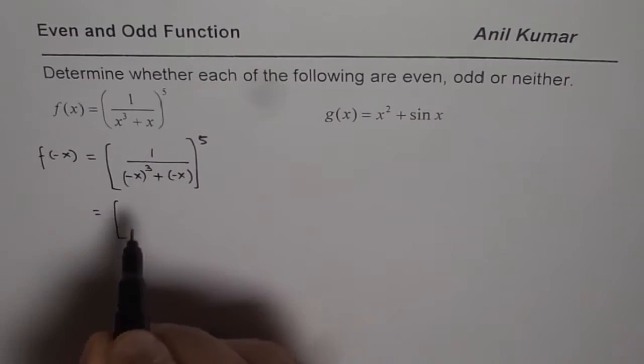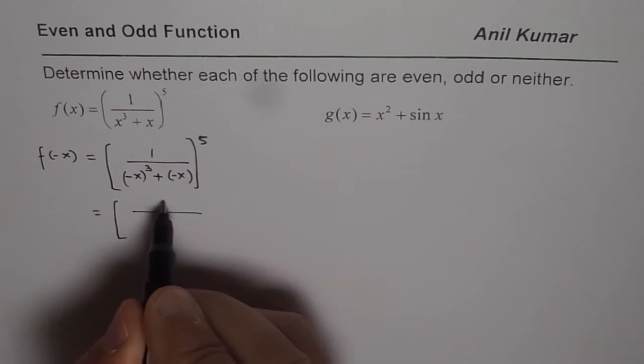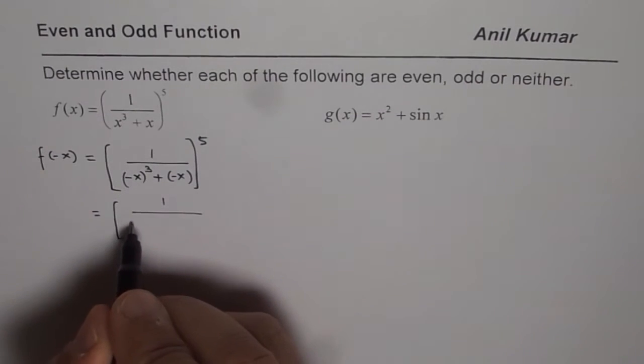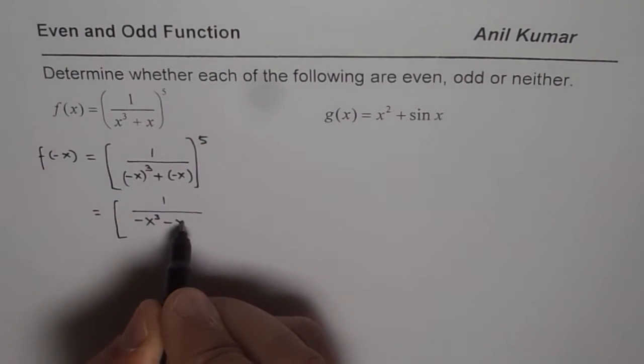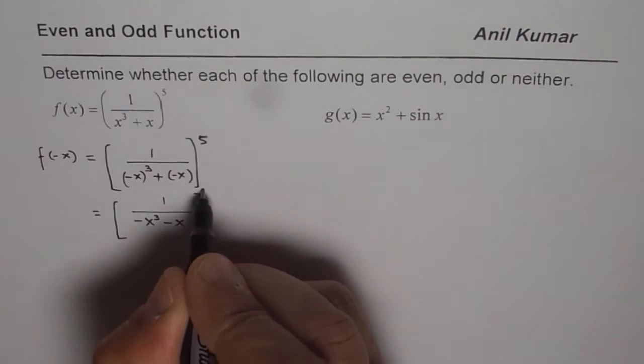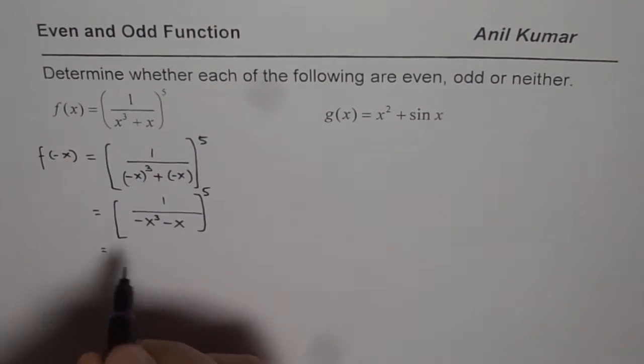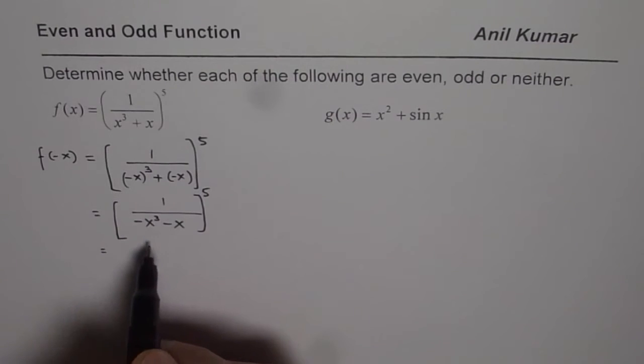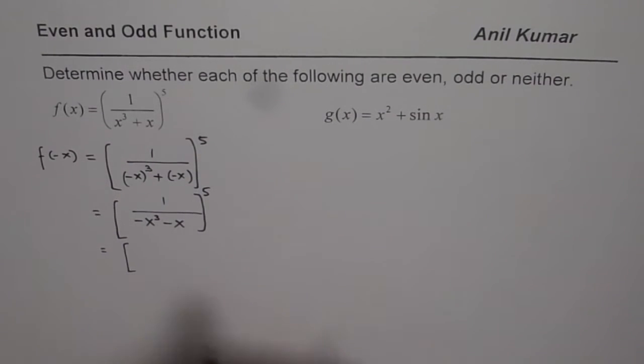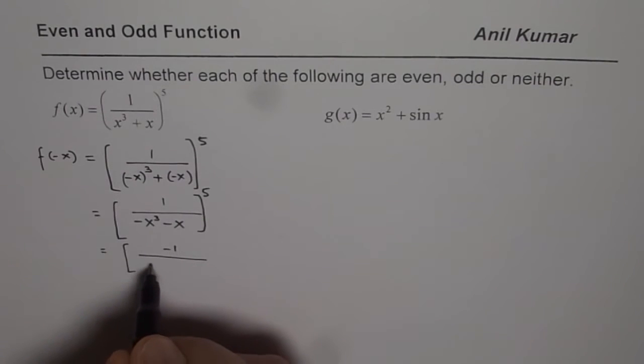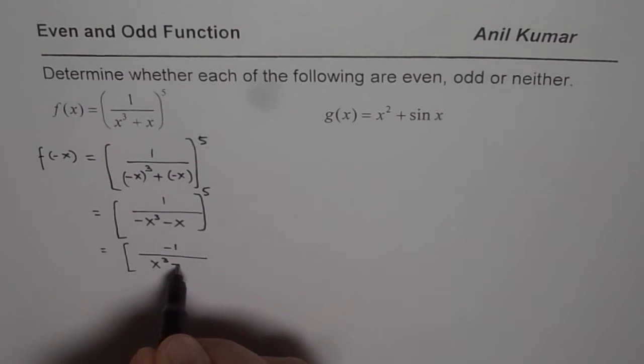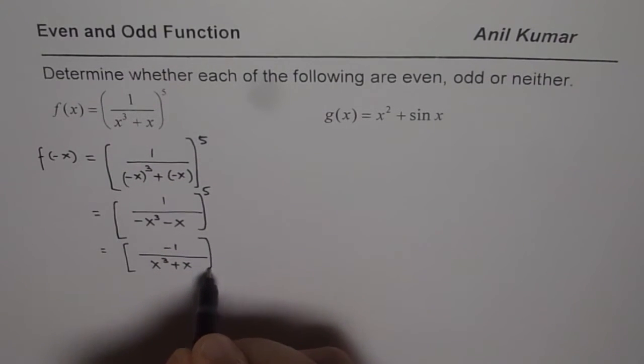What is in bracket, we know that minus when cubed will give us minus. We get minus x cube here and on the other hand we get minus x to the power of 5. Now, minus could be taken common and then we could write this as minus 1 and we could write the denominator as x cube plus x to the power of 5.